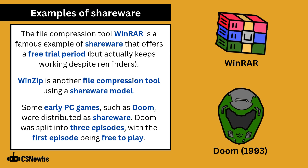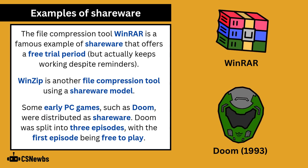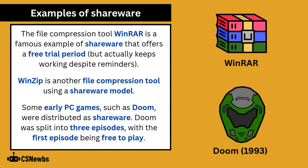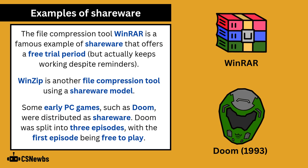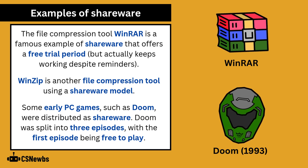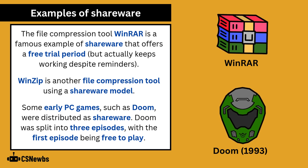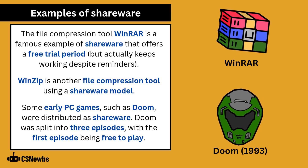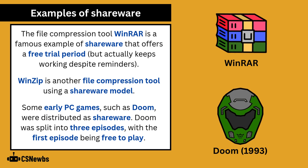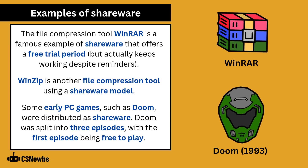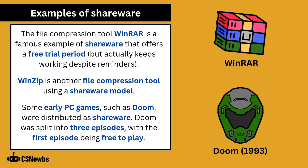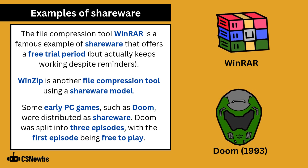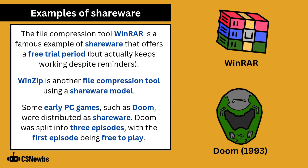The file compression tool WinRAR is a famous example of shareware that offers a free trial period but actually keeps working despite reminders. WinZip is another file compression tool using a shareware model, and early PC games such as DOOM were distributed as shareware.